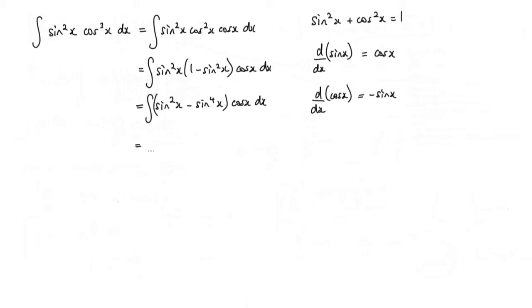Okay, let's carry on then. Well I think the next thing to do is to have a substitution. So I'm going to let u = sin x and therefore du/dx = cos x.